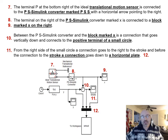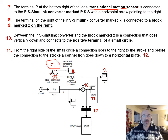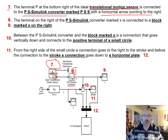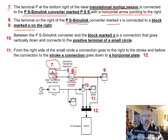Continuing to element seven: terminal P at the bottom-right of the ideal translational motion sensor is connected to element eight, the PS-Simulink converter (PSS), with a horizontal arrow pointing right. The output terminal on the right of that converter is marked X, connecting across to block X labeled as element nine.